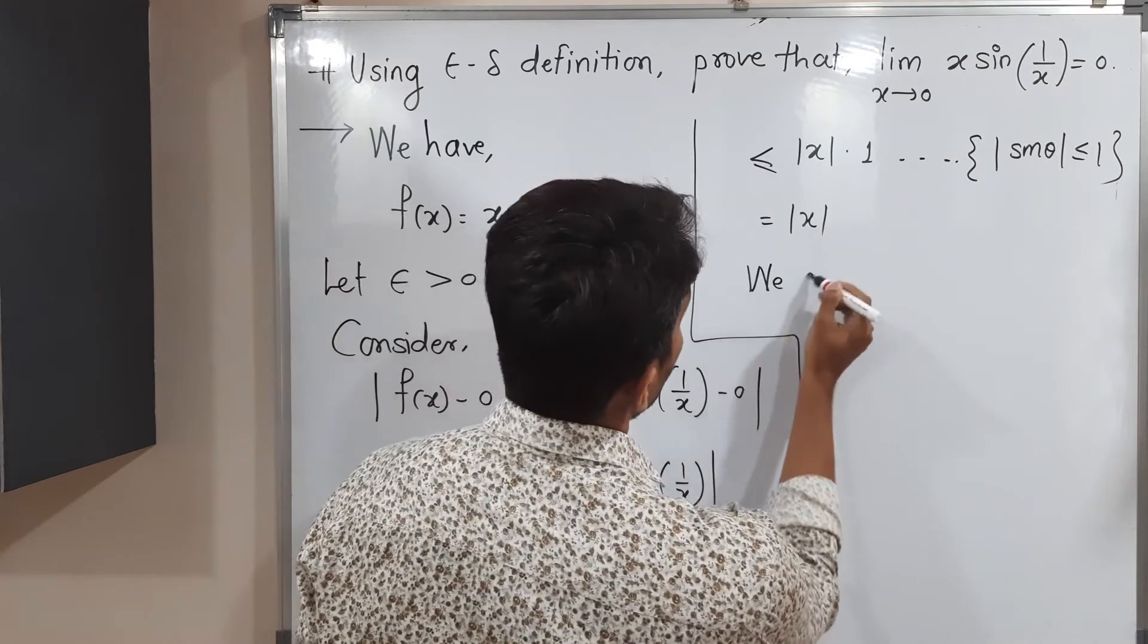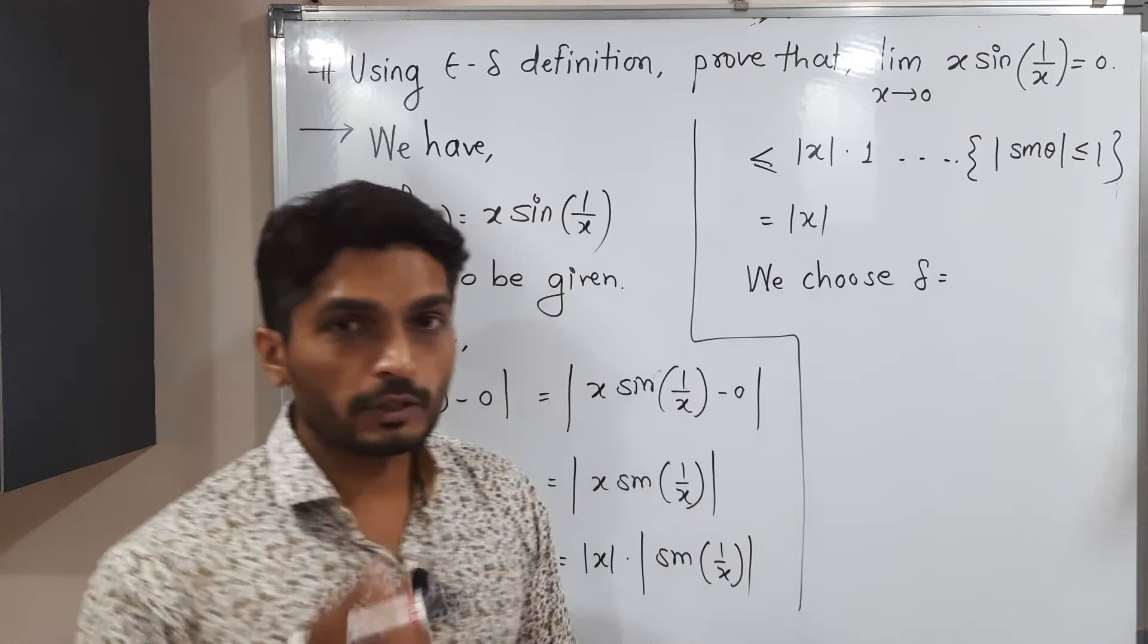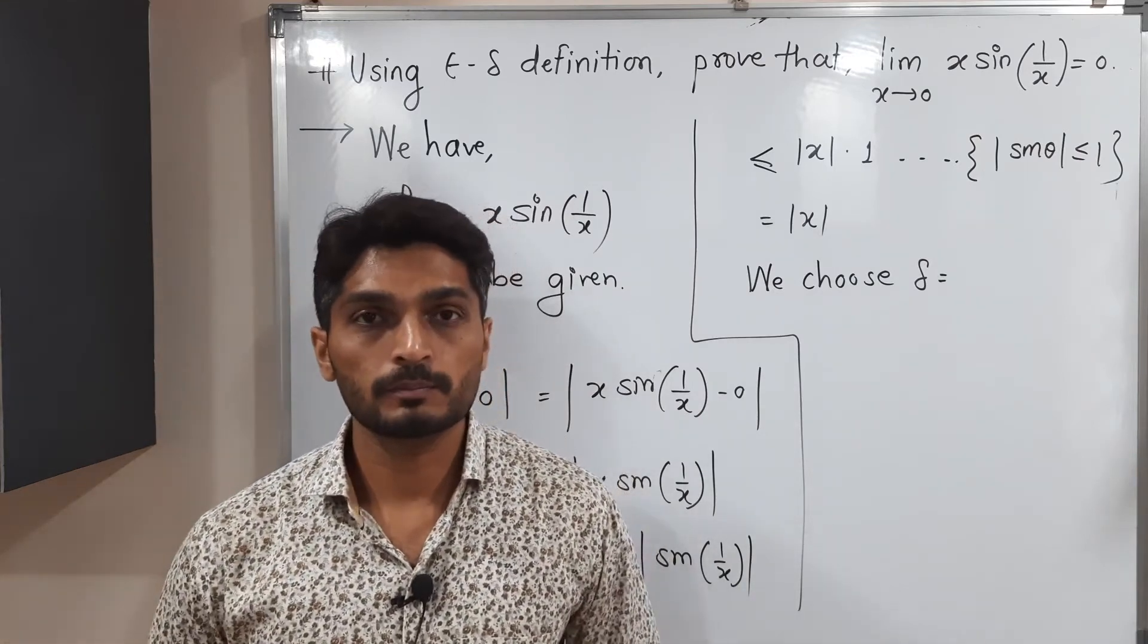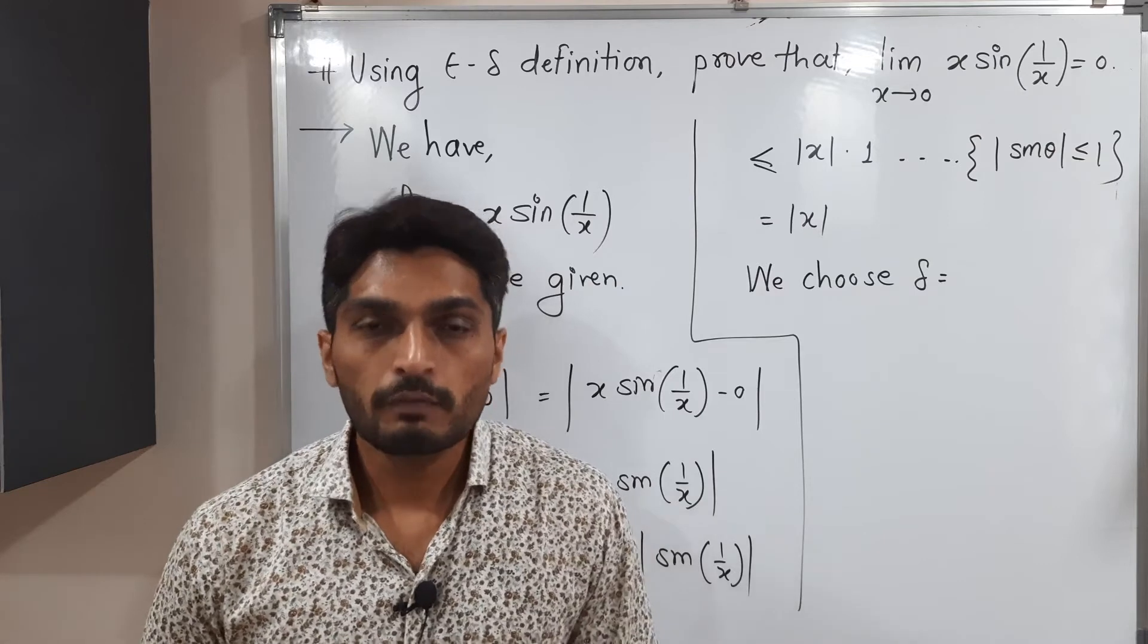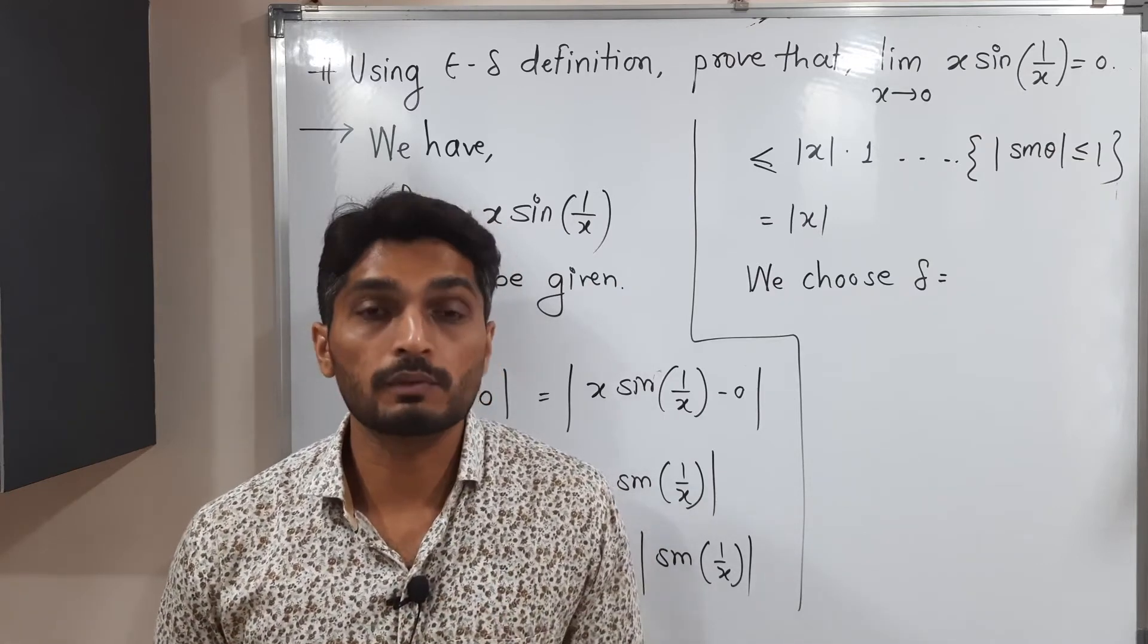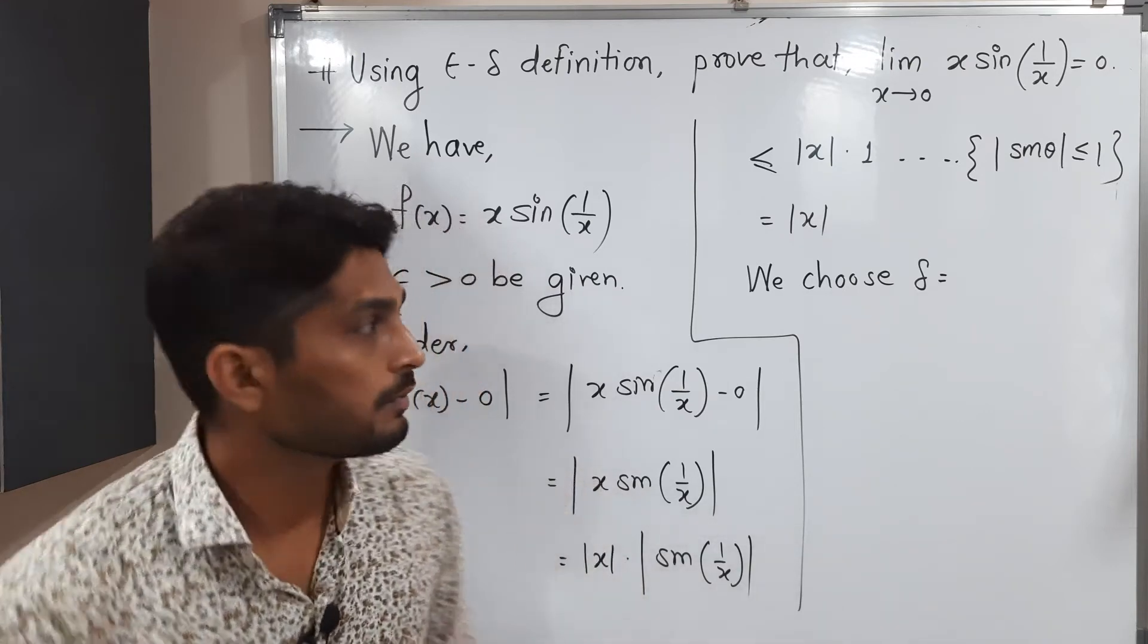So now we have to select our delta. We choose delta is equal to... Can you tell me the value of delta which we have to select, which will satisfy the definition? We will keep it blank. We will go further. And after solving few steps, we will realize this delta we have to select.